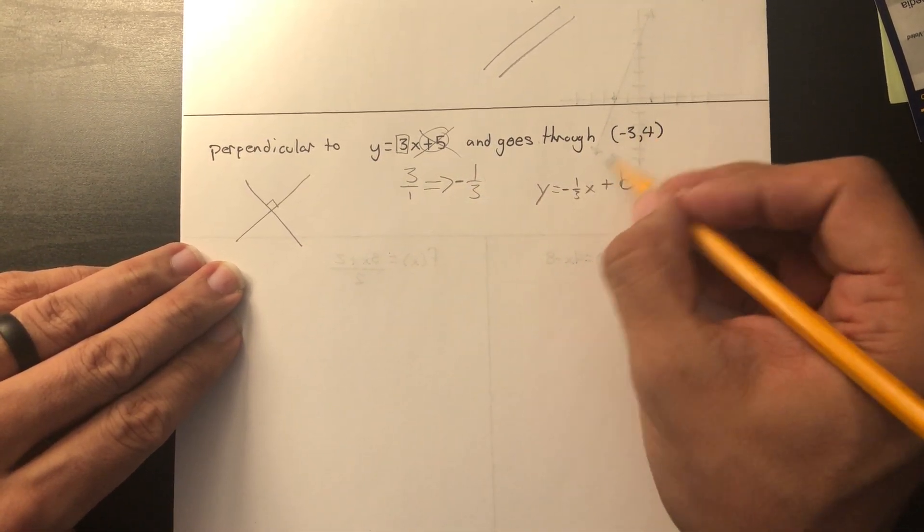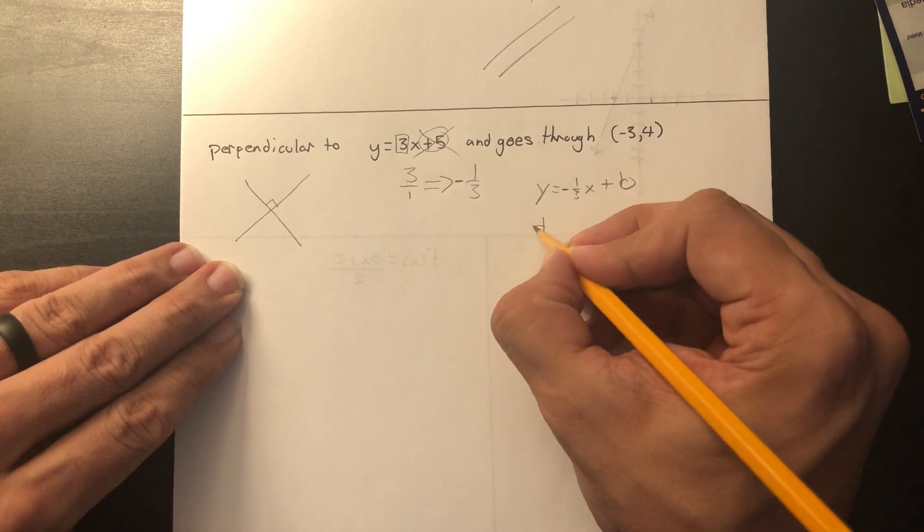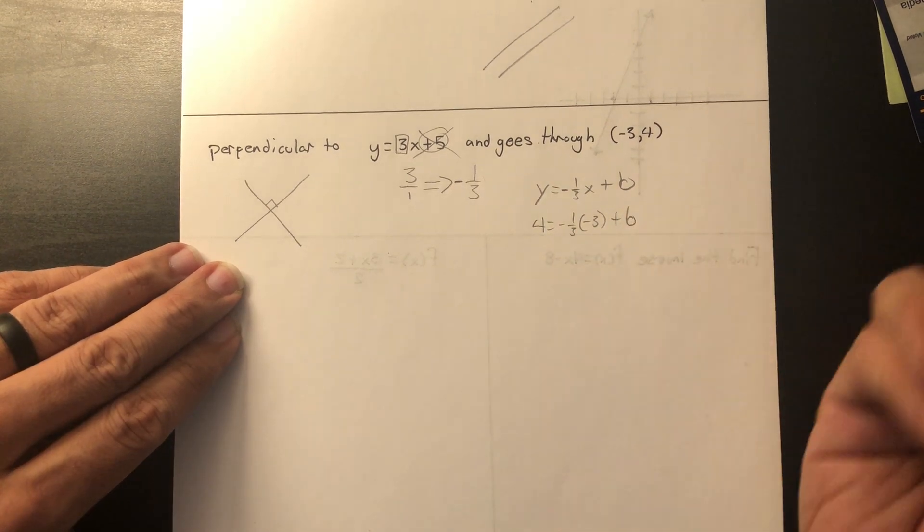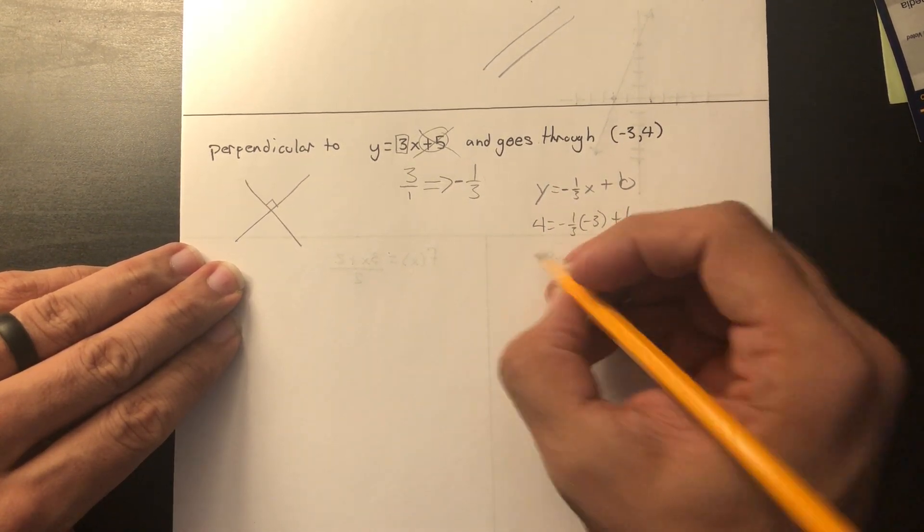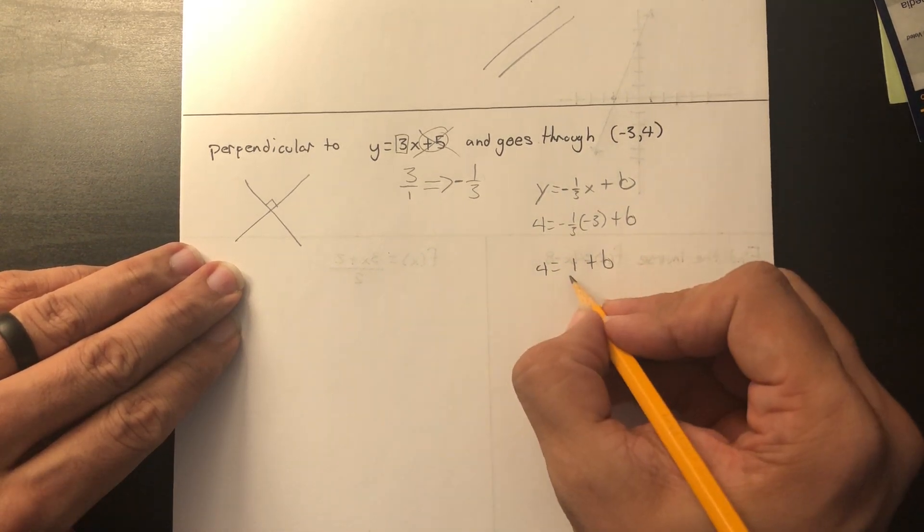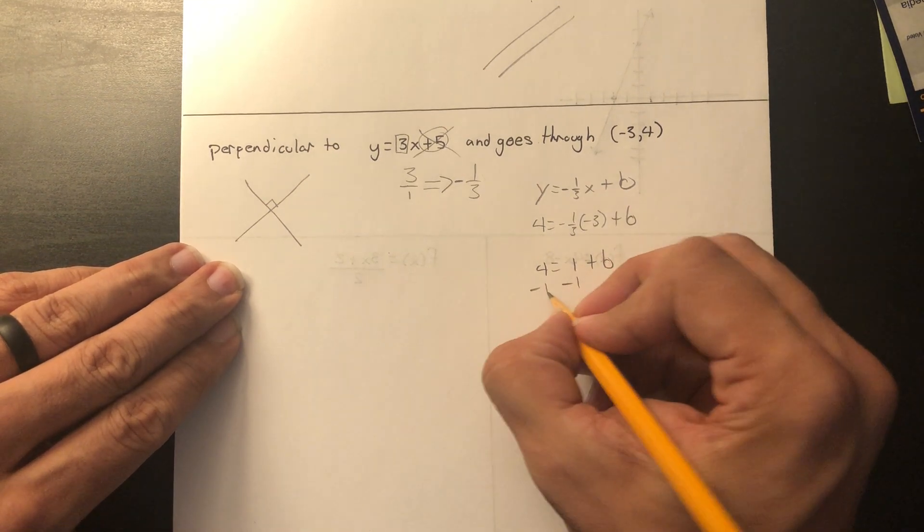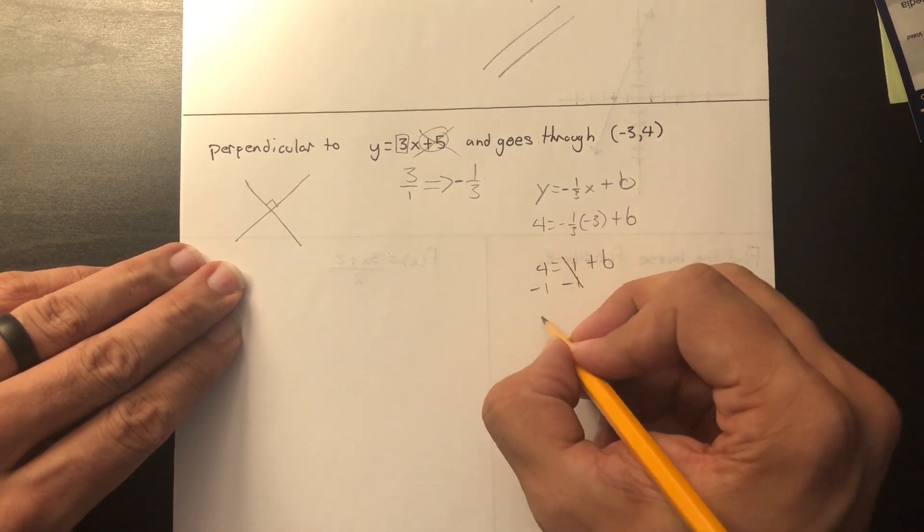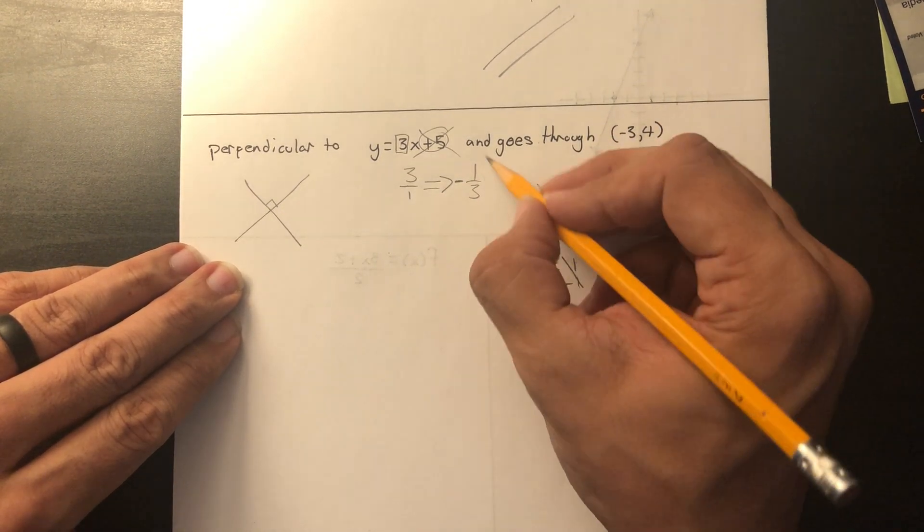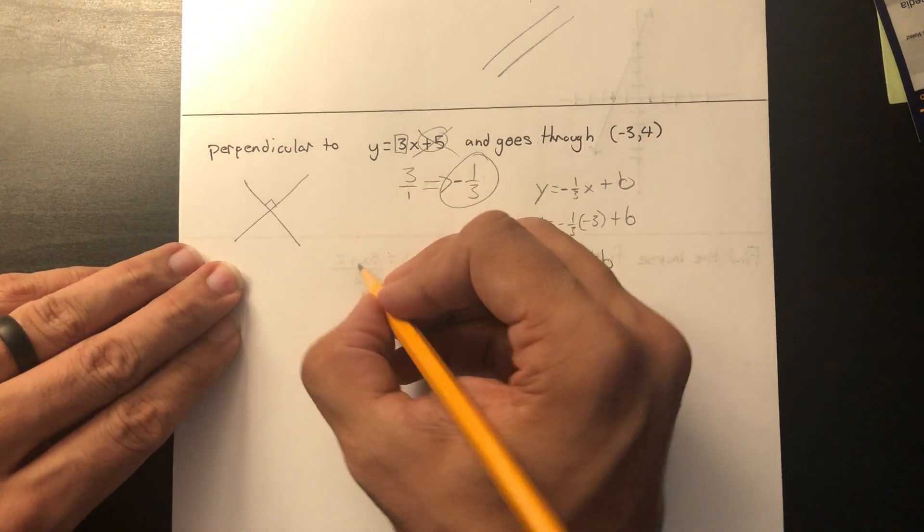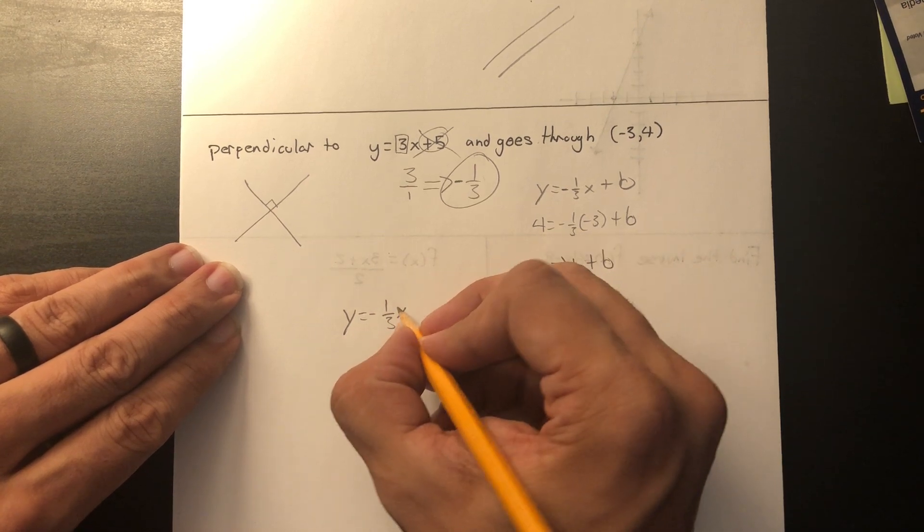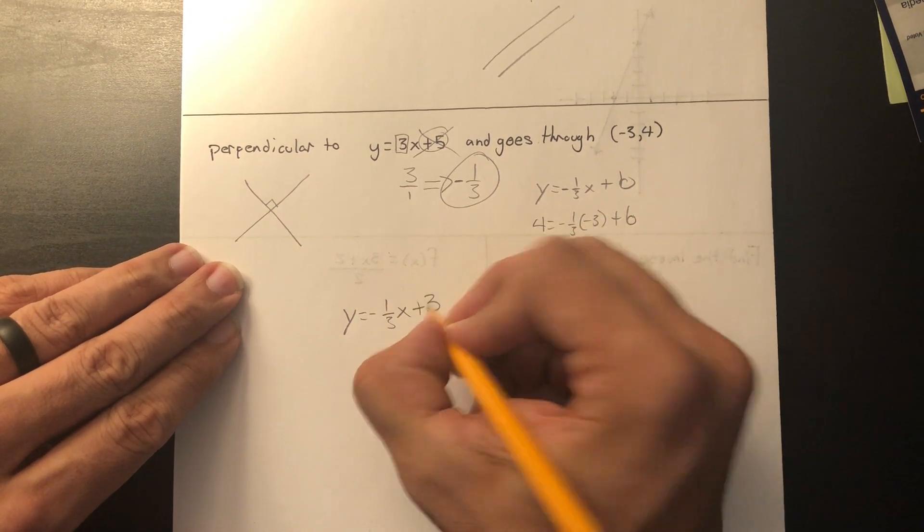You're just using the slope. Now we're going to plug this number in. So the y goes over here. Negative 1 third times negative 3 plus b. This is going to multiply. You're going to get 4 equals 1 plus b. Then you're going to subtract 1 on both sides. This leaves me with 3 equals b. You know what the slope is and you know what b is. You can write the slope intercept form: y equals negative 1 third x plus 3.